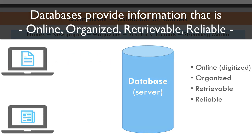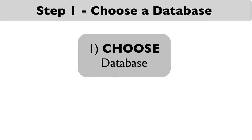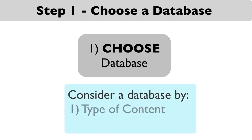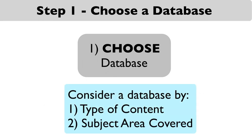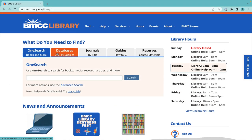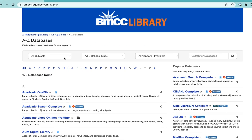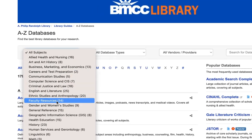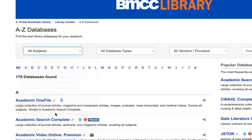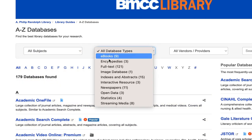Because of this variety of content, Step 1 is very important. You want to choose the best database for both the type of content and the subject area you are researching. From the BMCC Library homepage, go to Databases A to Z by Subject and view the complete list of databases. See how easy it is to sort by subjects or by types.